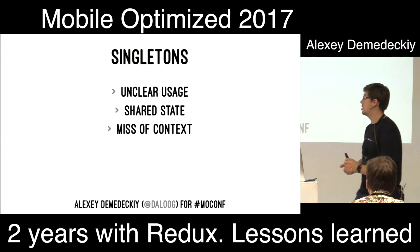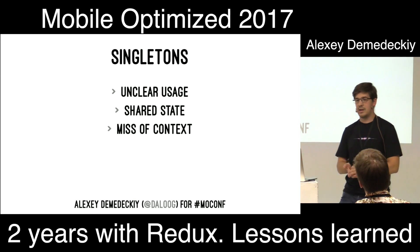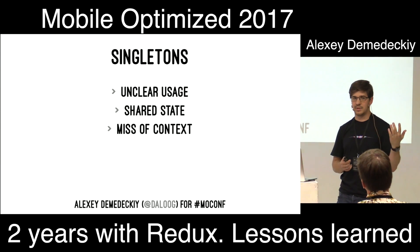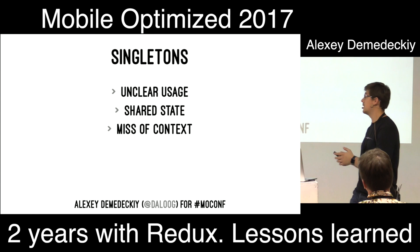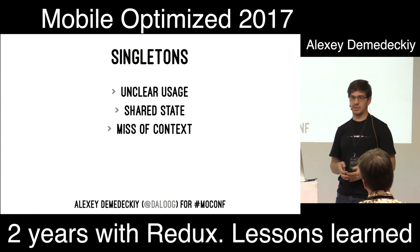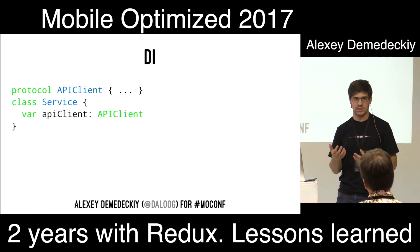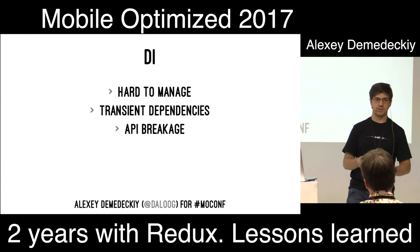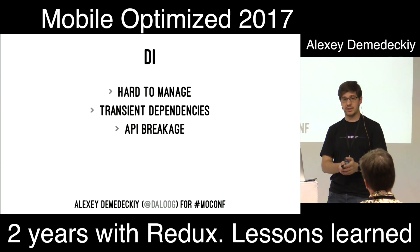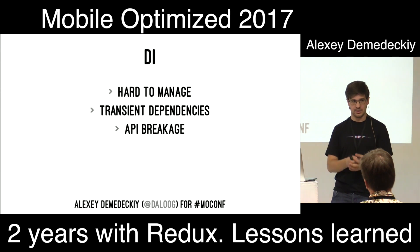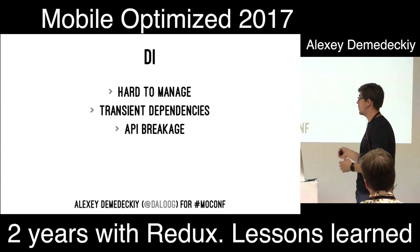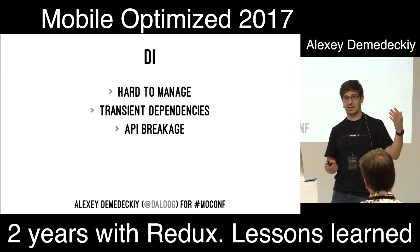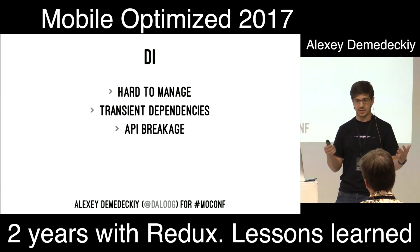The fourth lesson is about having dependencies. There are several practices for handling dependencies. The first and naïve approach is singletons — pretty simple, you just declare something as a singleton and use it elsewhere. But singletons have unclear usage — you don't know how they are used across your application. They can have shared state, so you receive logical data races again. And singletons can miss context — if your singleton requires some configuration, different parts of your application may not know whether configuration was done or not.